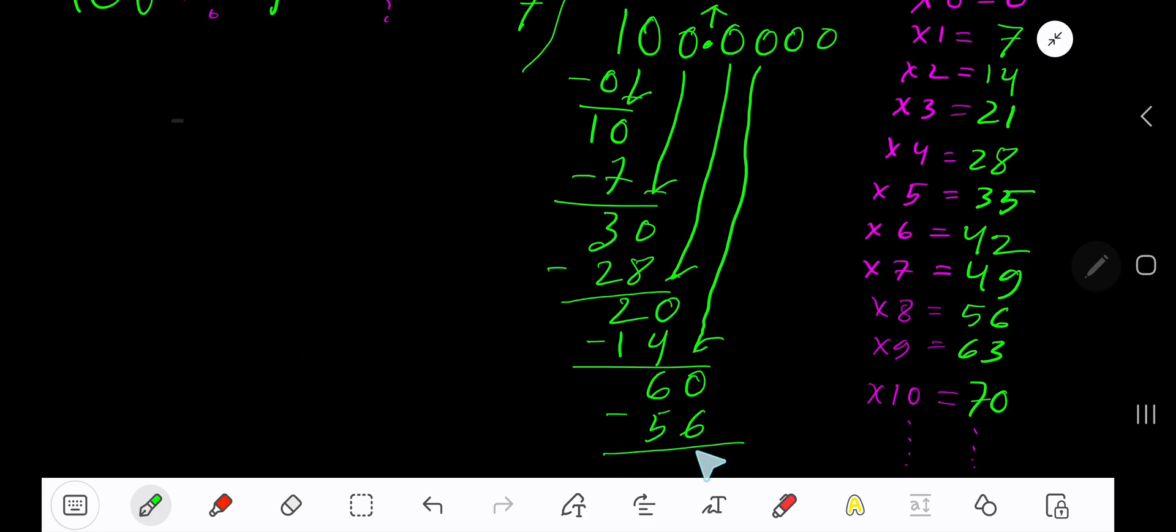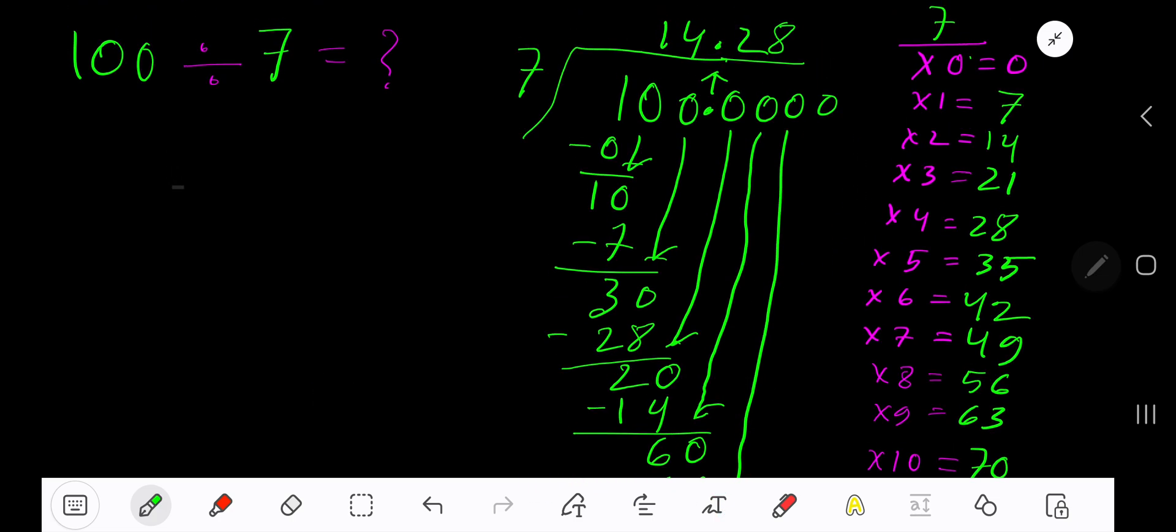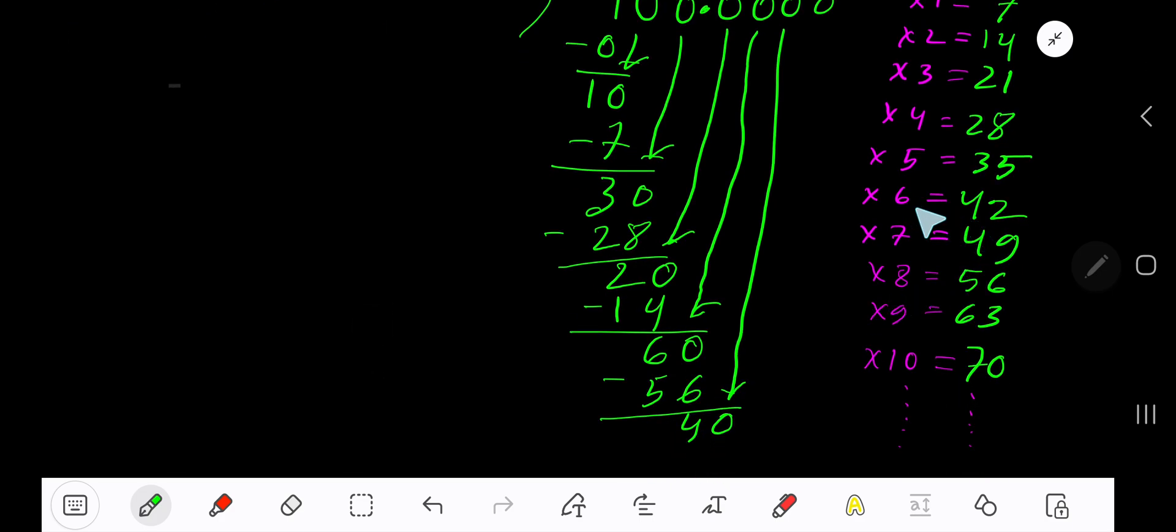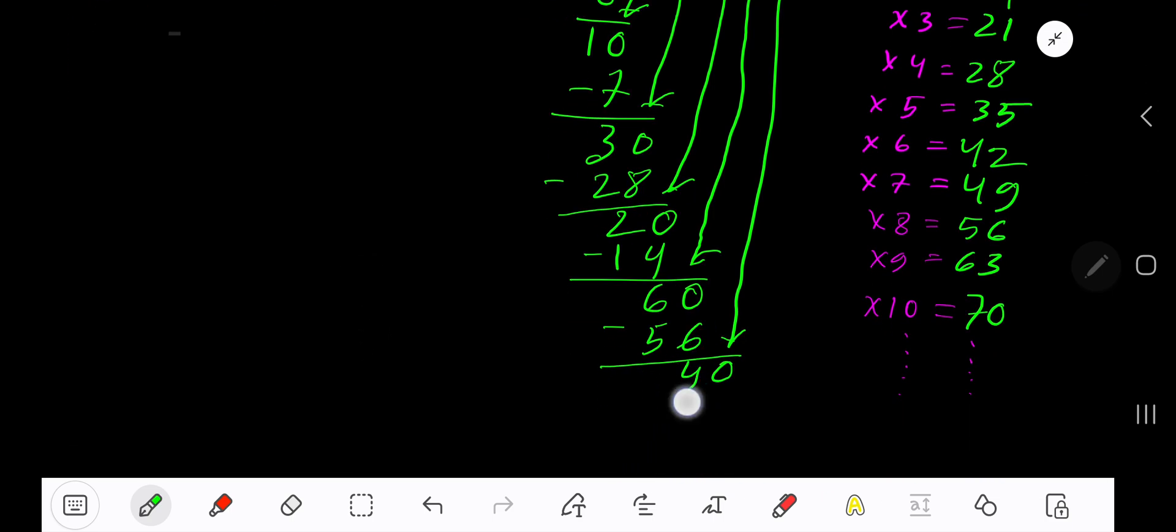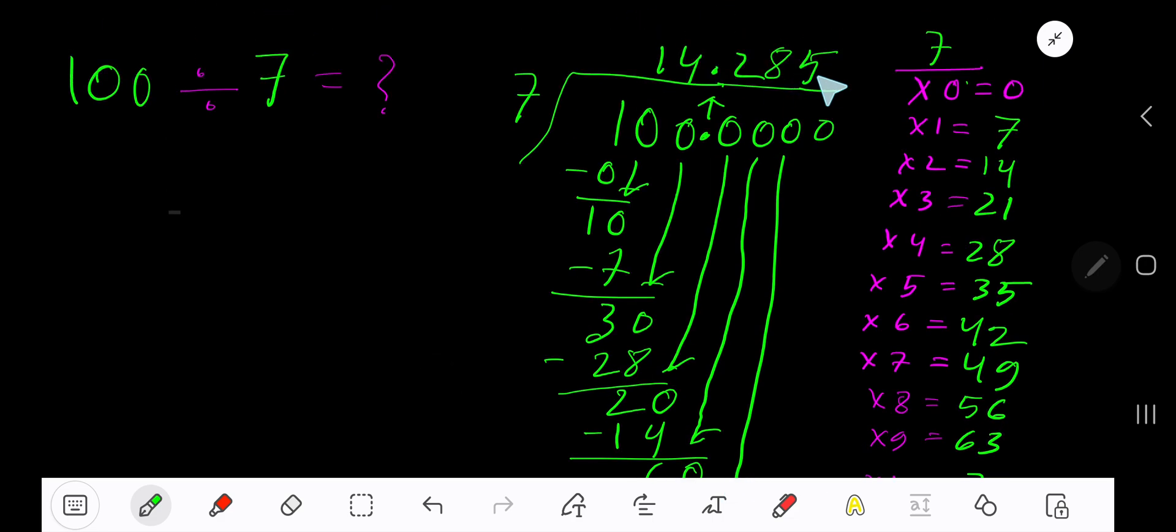Subtract to get 4. Bring down another 0 to get 40. 7 goes into 40 how many times? 5 times. 5 times 7 is 35, subtract to get 5. You can bring down more zeros, but since we have 3 places after the decimal, we'll stop here. This process continues, so 14.285... is the answer.